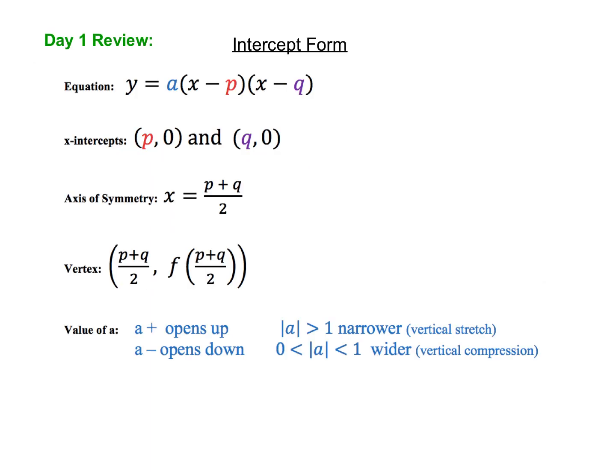Let's start by reviewing the formula for intercept form. Intercept form is equations of the form y equals a times x minus p times x minus q, where the x-intercepts are located at p and q. To get those x-intercepts, you can either flip the signs of what you see in the parentheses, or an easy way to get it is to take each of the factors and set them equal to zero and solve for x.